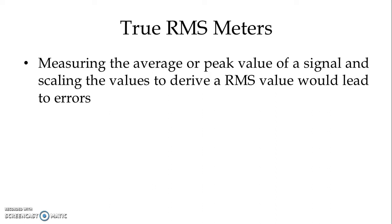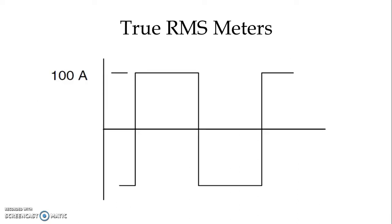But in the case of a harmonic-rich waveform, because of distortion, if we measure the average or peak value of a signal and then scale it down to the RMS value, it will definitely give the wrong value.